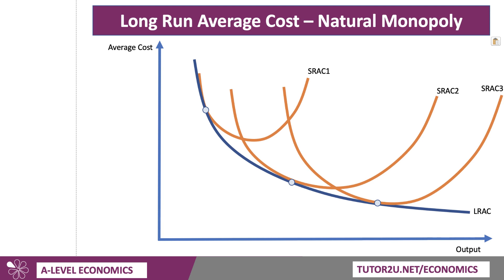Indeed, we may not necessarily reach a minimum point, although it does seem to be flattening out, and there may be some diseconomies of scale at some point. But that is essentially the shape of the diagram to draw if you get a question on a natural monopoly. The key takeaway point is that it may only be sensible to have one firm providing the core infrastructure, the core network, maybe some competition in the final mile service between customers. Oftentimes in a natural monopoly, the scale economies favour monopoly.